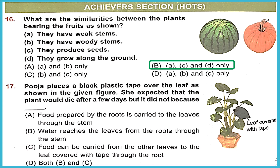Question 17: Puja places black plastic tape over one leaf of a plant; she expected the plant would die but it did not. The statement 'food prepared by the roots is carried to leaves through the stem' is wrong — food is not prepared by roots; the leaf is the chef. The correct reason is: water reaches the leaves from the roots through the stem. Option B is the correct answer.